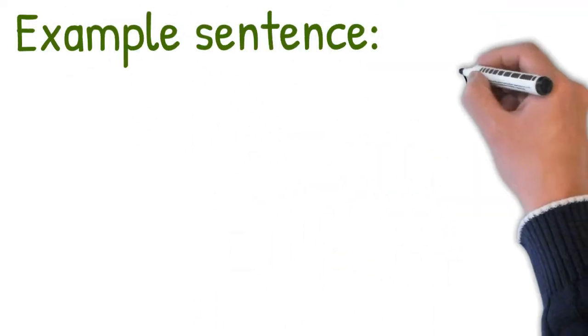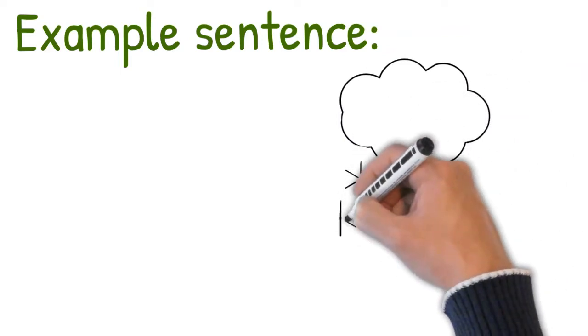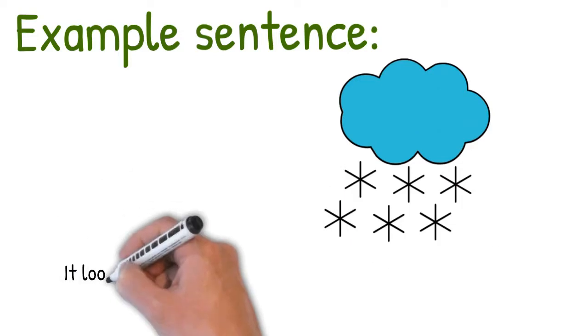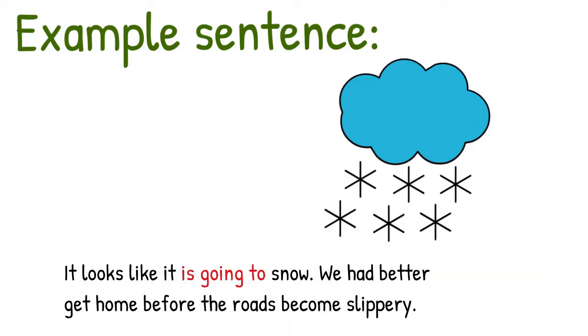Another example of evidence in the present to predict the immediate future is the weather. You can tell by the clouds in the sky what's going to happen next. Here's the example sentence. It looks like it's going to snow. We'd better get home before the roads become slippery. It looks like it's going to snow because there's snow clouds in the sky.